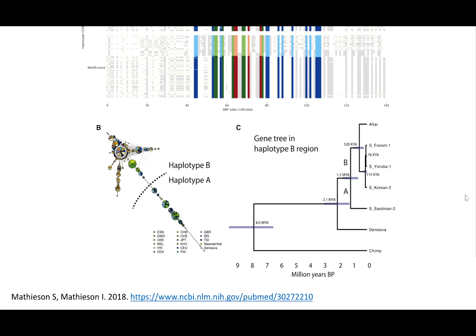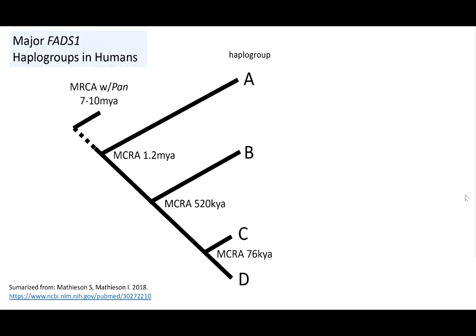This figure should look somewhat familiar to the genetic distance trees, rooted and unrooted, that you've seen before in class. I've created a summary figure that's a little bit easier for our conversation. There are four major haplogroups in FADS-1, meaning four major alleles with deep ancestry: A, B, Z, and D.